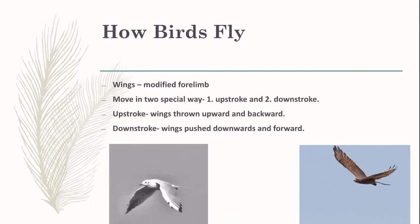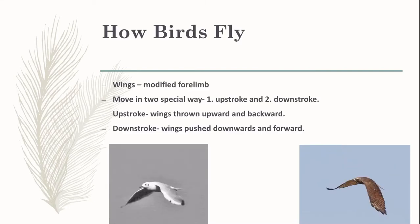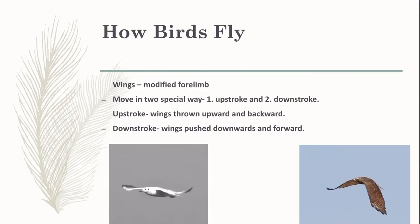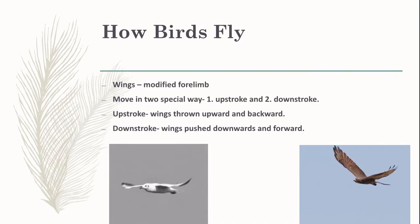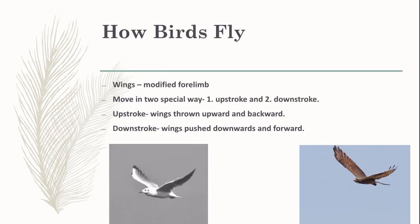To change the direction of flight, birds use their tail feathers. Vultures and kites can fly very high, while sparrows fly very low. Pigeons and crows have strong flight muscles and can fly long distances. Hens and peacocks can fly only a short distance. Some birds like penguins cannot fly at all because they have weak flight muscles and heavy bodies; however, they can walk fast on the ground and swim in water.